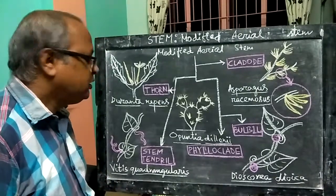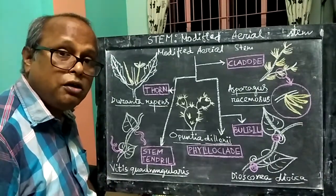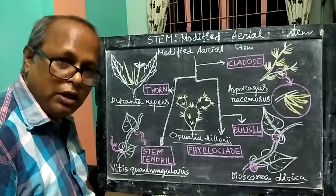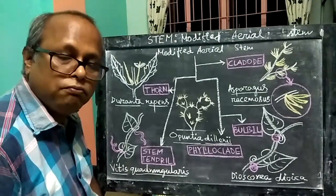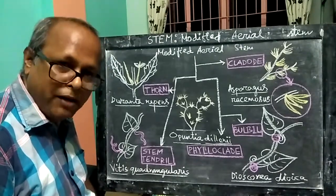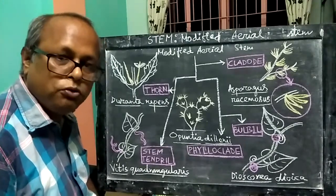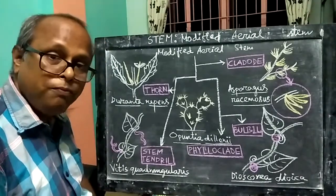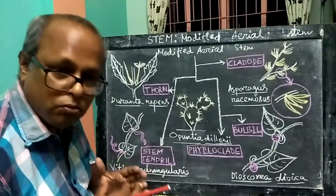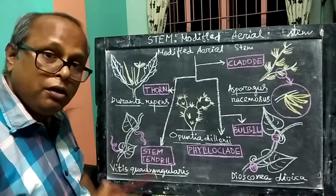Hello everyone. This topic is Structural Organization in Plants, specifically the Morphology of Flowering Plants. In the first few chapters, we are covering the topic called Stem.